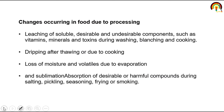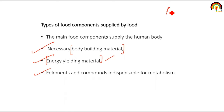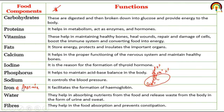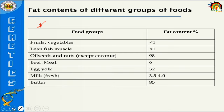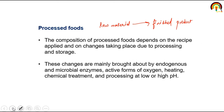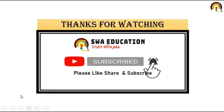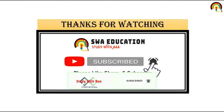In summary, today we discussed food components — how they supply the human body — and their role in body building, energy yielding, and compounds indispensable for metabolism. In detail, we discussed food components like carbohydrate, protein, fat, dietary fiber, calcium, iodine, phosphorus, and their composition in different food sources and their nutritional value. Thank you so much everyone. If you find this video beneficial, please like, share, and subscribe for more videos, and comment below for any queries.